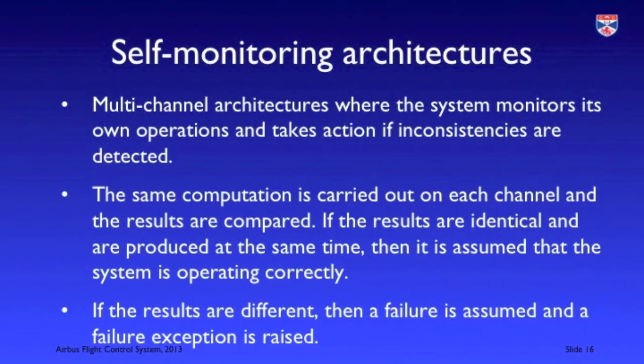The architecture of the computers in the Airbus is a self-monitoring architecture, where each computer has two channels, each of which has its own processor. The same software executes on each channel and when a computation is made the results are compared. If the results are the same then the computation is assumed correct; if not, something has gone wrong and that computer shuts down and automatically transfers control to one of the other flight control computers.